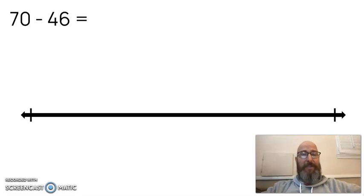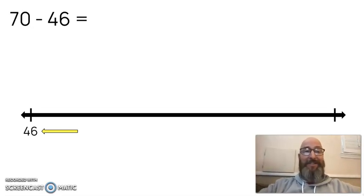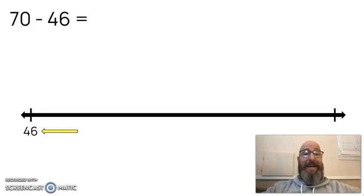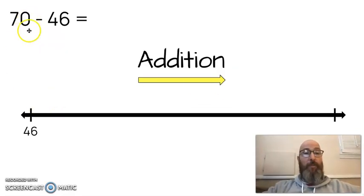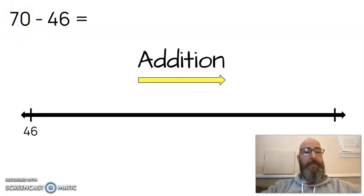70 minus 46. Who remembers where I start? What's the first thing I do? You got it right, didn't you? You start with that 46. You put it at the very beginning. Because we're going to be adding, going up the number line to the bigger number. We're working our way up to 70, which happens to be a ten. This is not a ten. So let's start adding by ones until we get to that 10.